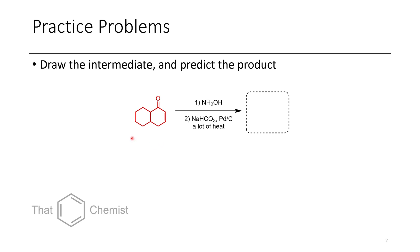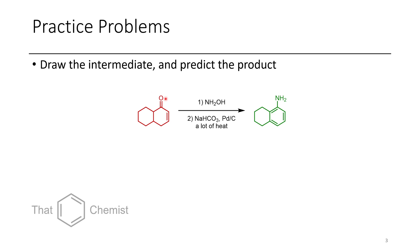In the first problem we have to draw the intermediate and predict the product. What we first get is an oxime — the hydroxylamine forms an amine on this alpha-beta unsaturated ketone. In the next step we undergo a rearrangement reaction where the oxygen is able to leave due to the presence of palladium, and we get an aniline as our product. Check out the last video if you'd like to see how this reaction works.